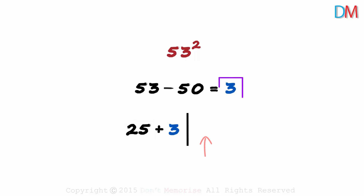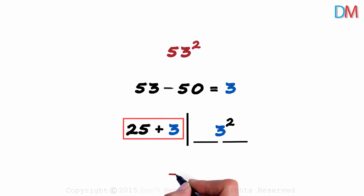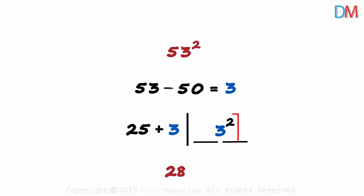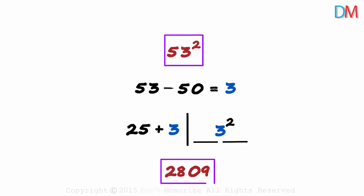On the right, we square the difference — it will be 3 squared. And what about the number of digits on the right? In this method, we will always have two digits on the right. 25 plus 3 is 28, and 3 squared is 9. But as we need to have two digits on the right, we write 9 as 09. So 53 squared is 2809.